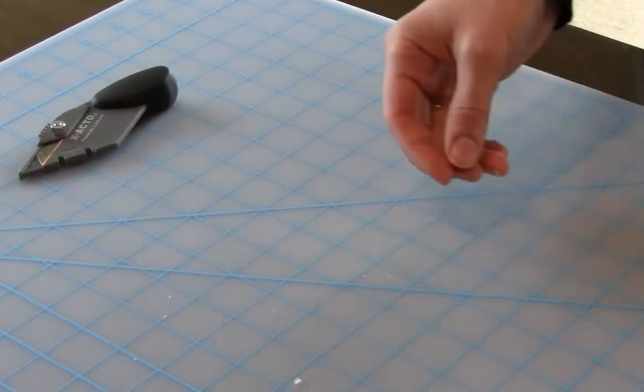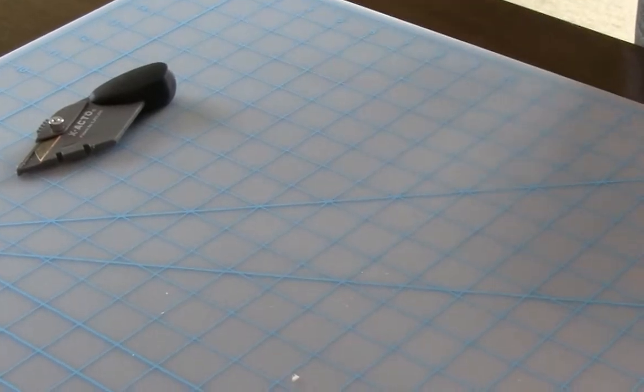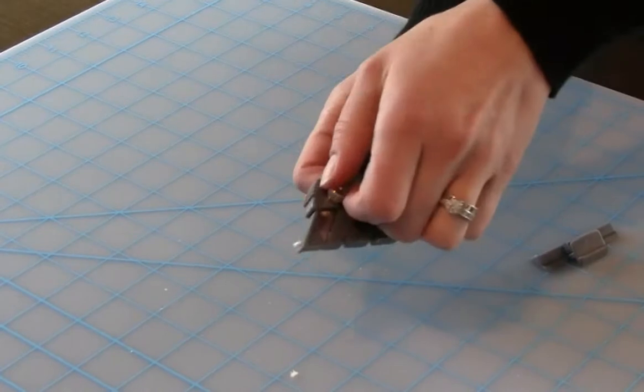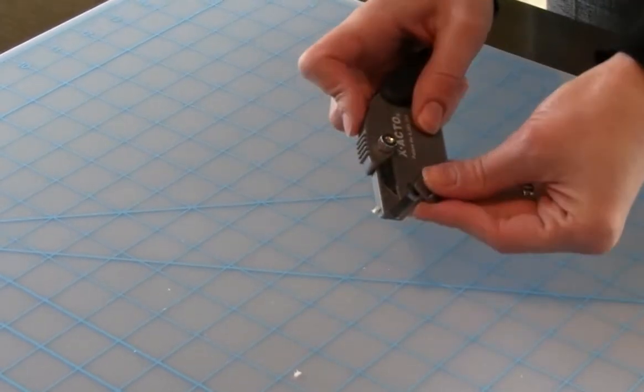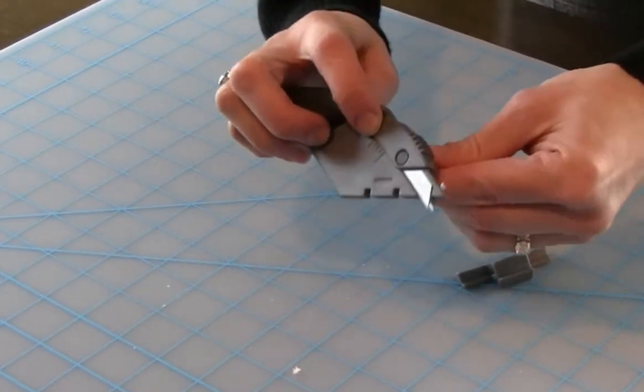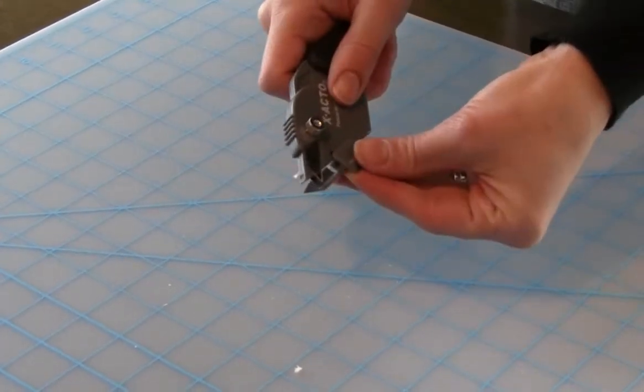To cut foam board using a V-Cut method, adjust the cutter so you are using both blades again and adjust the depth to the midpoint. Snap the 45 degree adapter onto the cutter handle.